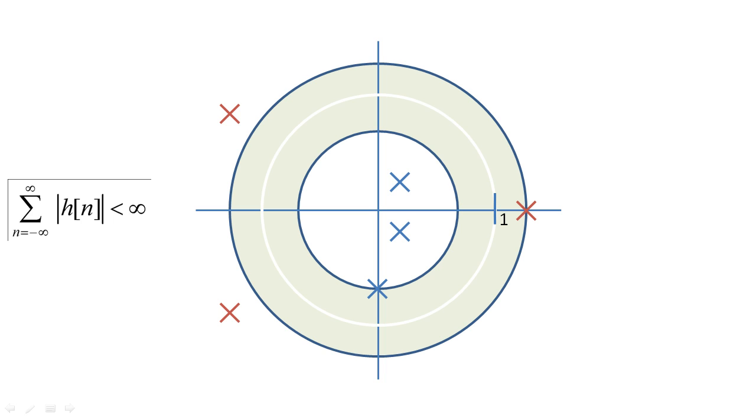So that means that all right-sided poles must be less than magnitude 1, and all left-sided poles must be greater than 1.